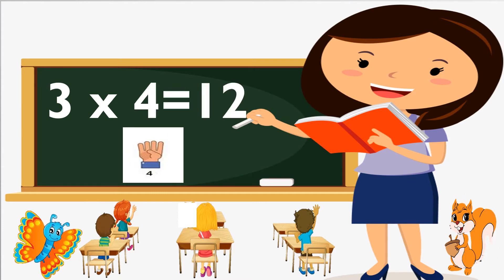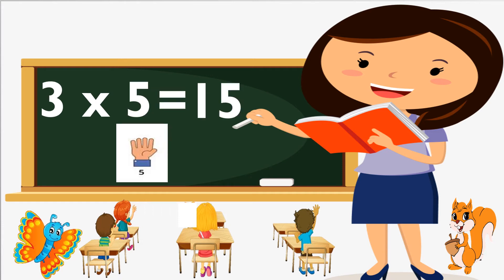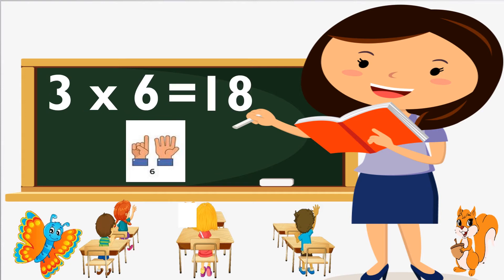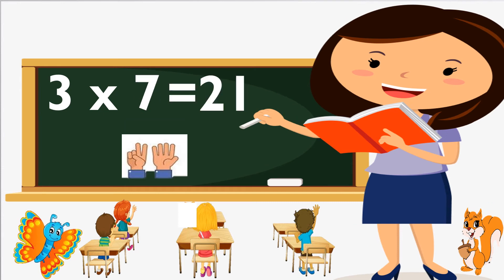Three fours are twelve, three fours are twelve. Three fives are fifteen, three fives are fifteen. Three sixes are eighteen, three sixes are eighteen. Three sevens are twenty-one.